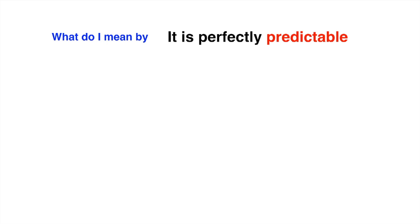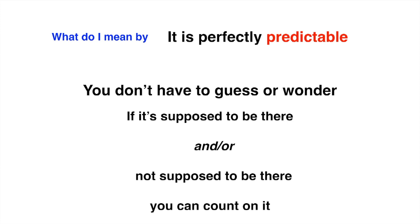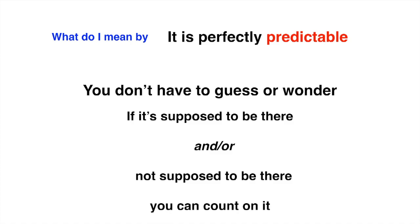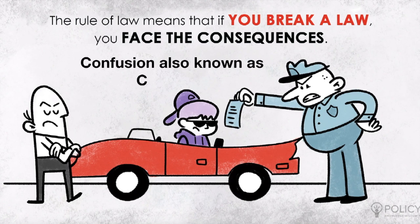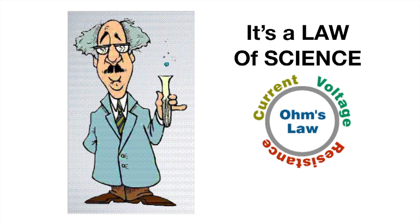Now what do I mean by that it is perfectly predictable? You don't have to guess or wonder. If it is supposed to be there or not supposed to be there, you can count on it. The rule of law means that if you break a law, you face the consequences. Confusion, also known as clutter, is those consequences. It's a law of science and we call that Ohm's law, current voltage and resistance. You just need to learn to trust it.